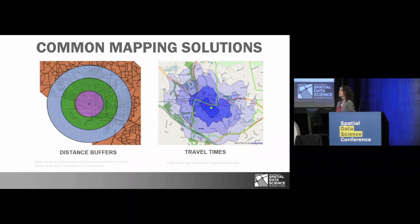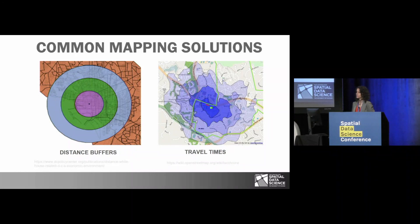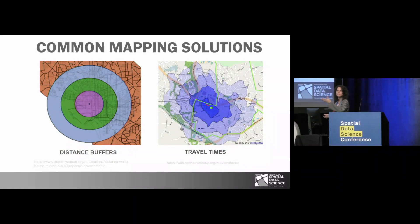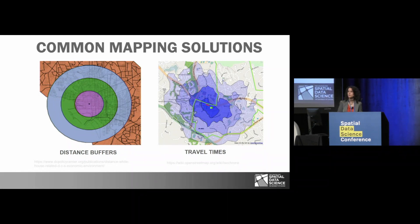For travel times, you get the same thing with isochrones — where you could have a 15-minute transit time, 30 minutes, 45 minutes, et cetera. So what's the problem with this?